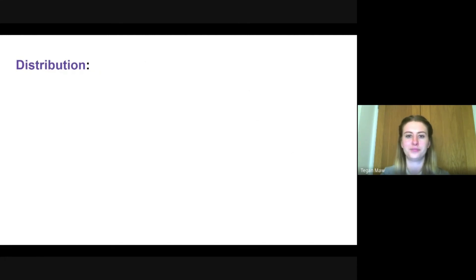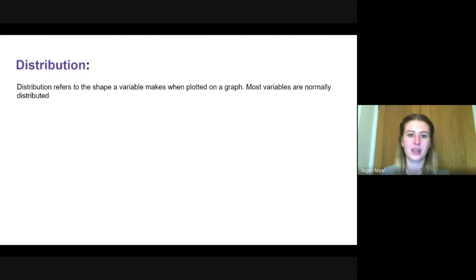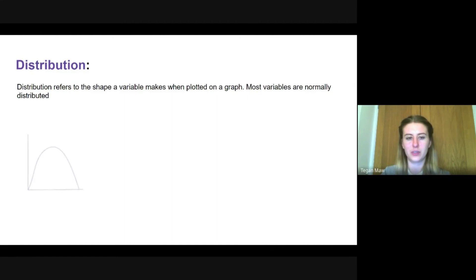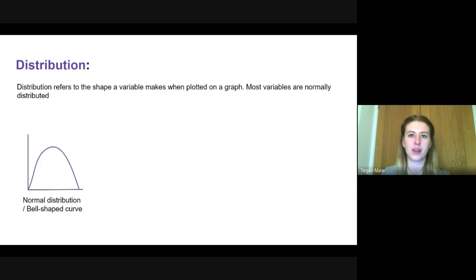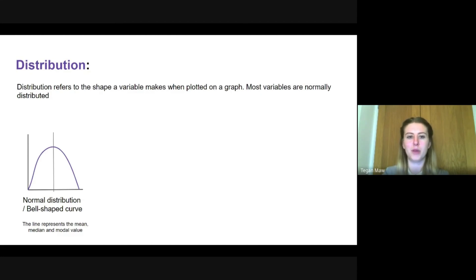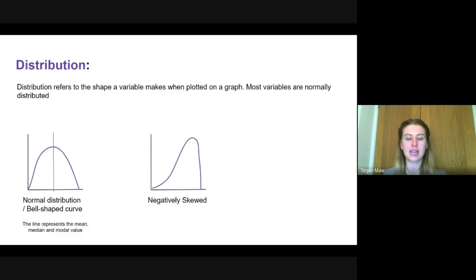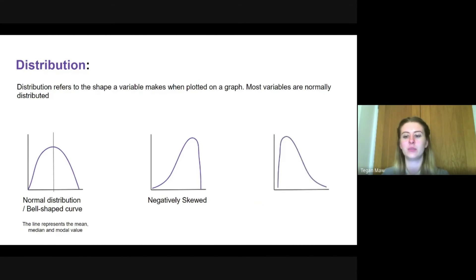Moving on to distribution: this refers to the shape a variable makes when plotted on a graph. Most variables are normally distributed — a bell-shaped curve with a line down the middle representing the mean, median, and modal value. We can also have a negatively skewed distribution, where most data points are concentrated on the right-hand side of the x-axis. The opposite is positively skewed, where most data points are concentrated to the left-hand side.